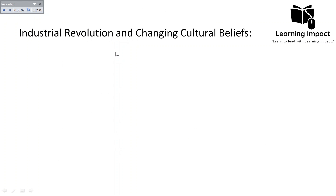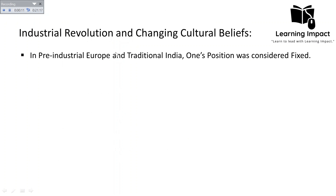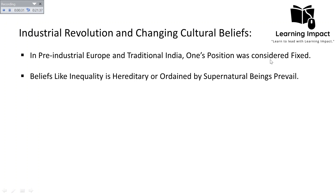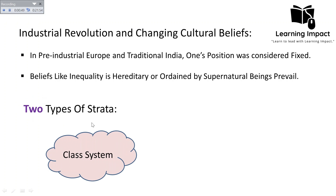The industrial revolution changed cultural beliefs, which in turn changed social stratification. In pre-industrial Europe and traditional India, one's position was considered fixed — beliefs prevailed that one's position was ordained by God and determined by birth. Ideologies like inequality being hereditary or ordained by a supernatural being helped maintain a fixed social stratification in those societies.